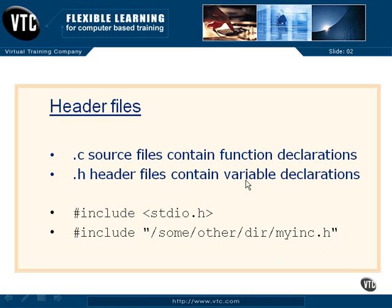Header files are created to contain our variable declarations. You should not have functions in header files because you'll never get them compiled. The header files have to be included into something else before they can be compiled, like into a .c source file — that's where your functions should stay. So that's just a little bit about header files, and we will be seeing more of them as we create some code later on.